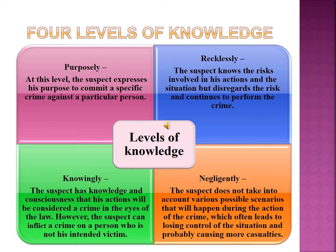Third is knowingly — the suspect has knowledge and consciousness that his act will be considered a crime in the eyes of law; however, the suspect can inflict a crime on a person who is not his intended victim. For example, if a shopkeeper sells a product knowingly that it is expired, he is knowingly committing an illegal act, although he does not personally have any grudges with the customer. The fourth is negligently — the suspect does not take into account various possible scenarios that will happen during the action, which often leads to losing control of the situation and possibly causing more casualties. For example, medical negligence or road and transport service negligence.